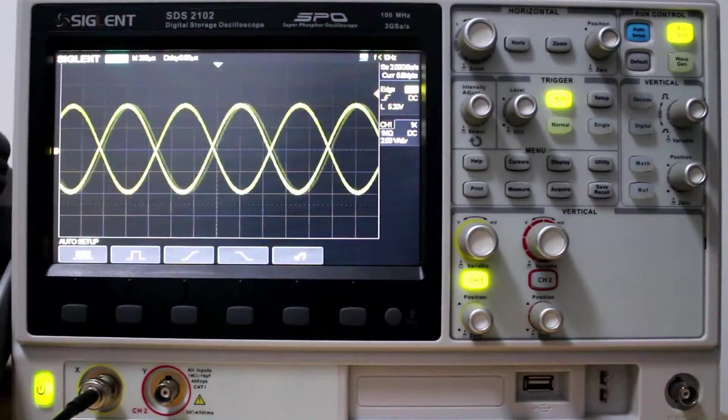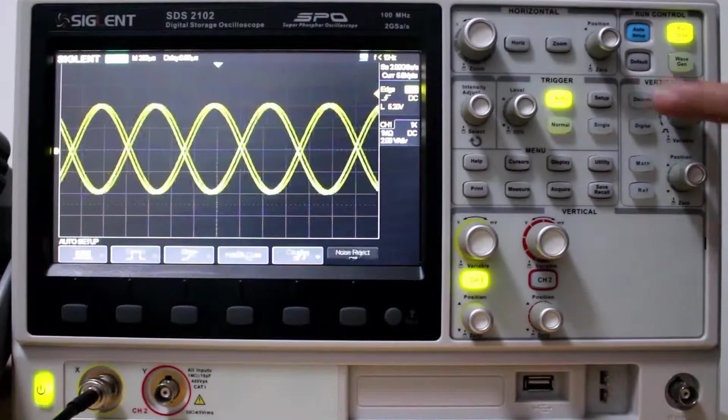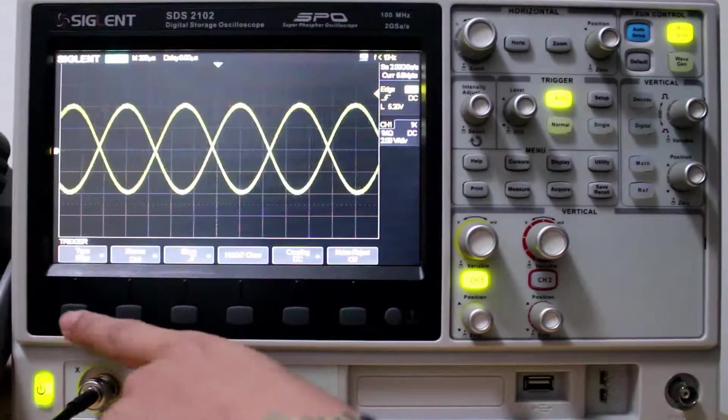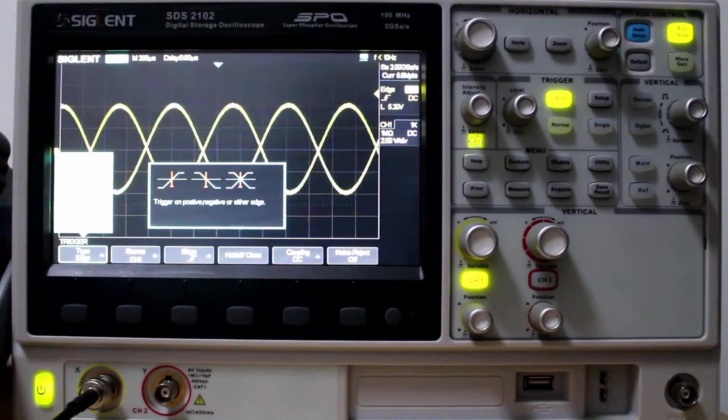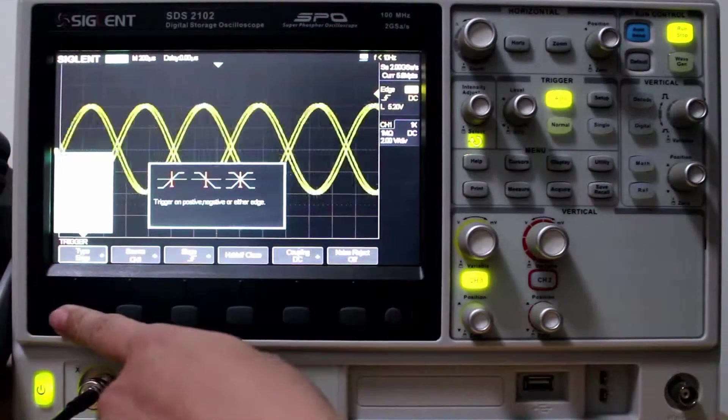Next we're going to look at the different trigger types. So let's check here. We've got Edge, Slope, Pulse, Video, Window, Interval, Dropout, Runt, Pattern.